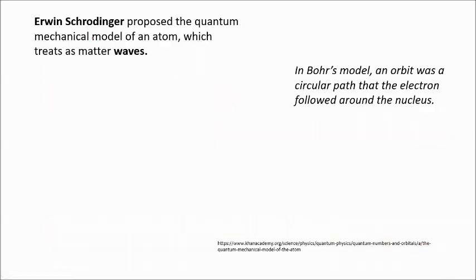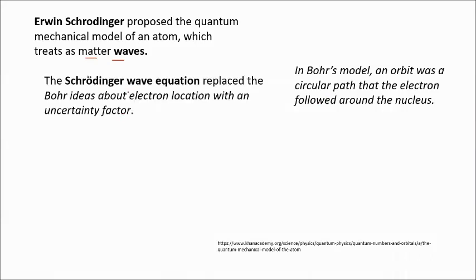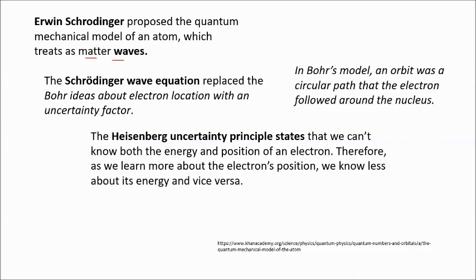Schrödinger proposed the quantum mechanical model of an atom which treats electrons as matter waves. While in Bohr's model an orbit was a circular path that an electron followed around the nucleus, Schrödinger's wave equation replaced that idea with an uncertainty factor. The Heisenberg uncertainty principle states that we cannot know both the energy and position of an electron — as we learn more about the electron's position, we know less about its energy, or vice versa.